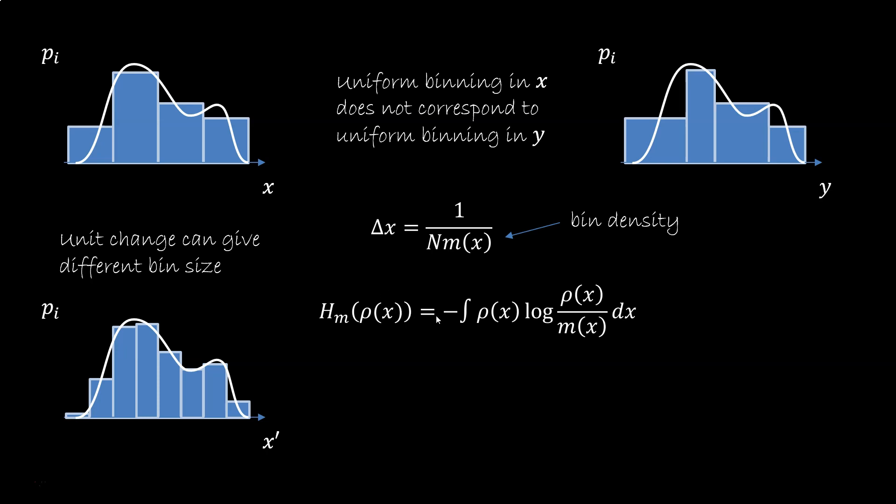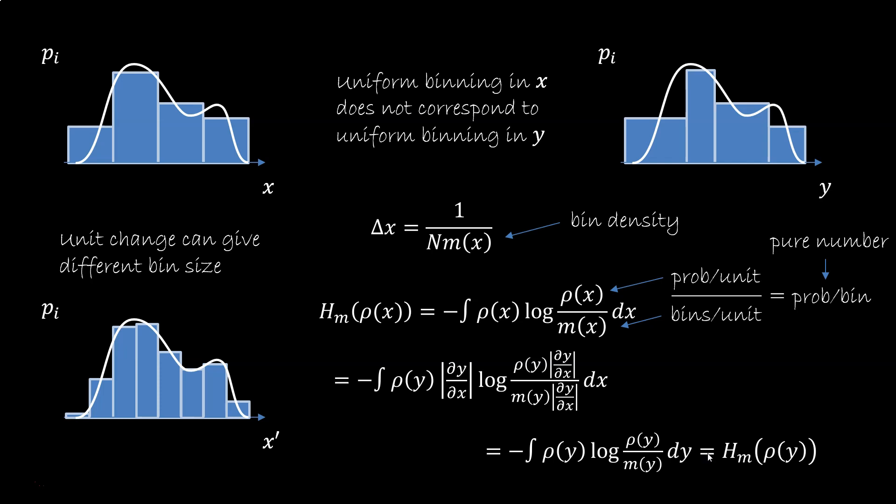Instead of simply using the bin size as one over n, we add this m of x term, which represents the bin density we are going to use. If we redo the limit, we have hm is the integral of minus rho log rho over m. Rho is the probability per unit, m is bins per unit, so we have probability per bin, which is a pure number. And this makes sense. If you change units, you get three Jacobians, one outside the log, and two inside the log, one for each density. But these simplify, so hm now has the same value over x and y. The m keeps track of the change in binning.